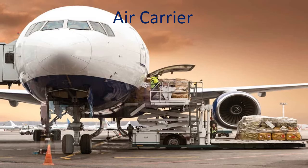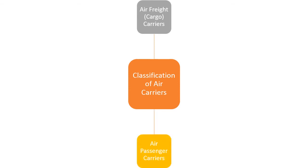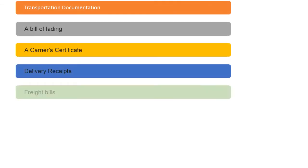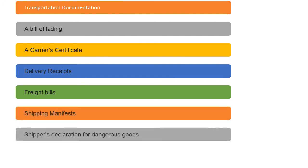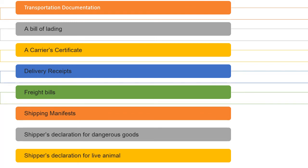Air Carrier: Classification of Air Carriers includes Air Freight Cargo Carriers and Air Passenger Carriers. Transportation Documentation includes: a Bill of Lading, a Carrier's Certificate, Delivery Receipts, Freight Bills, Shipping Manifests, Shipper's Declaration for Dangerous Goods, and Shipper's Declaration for Live Animals.